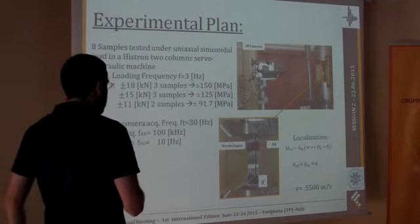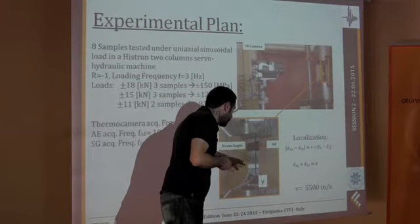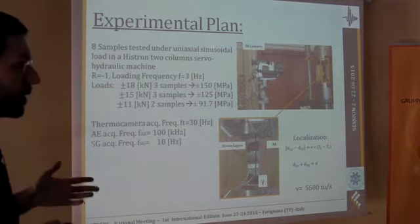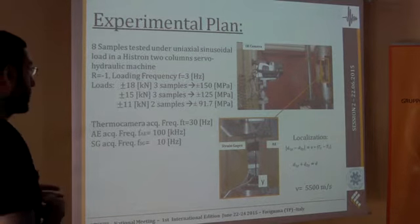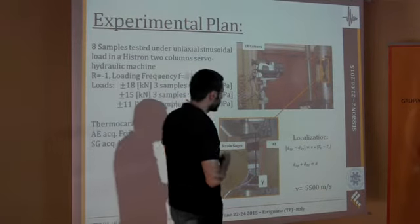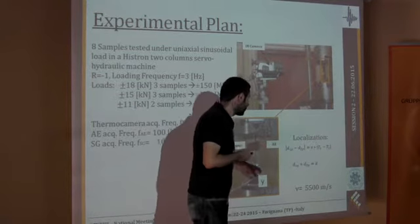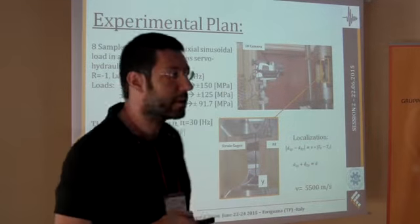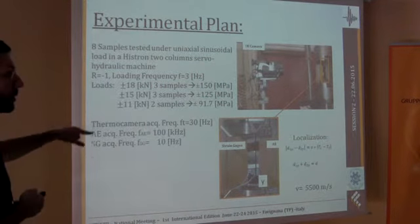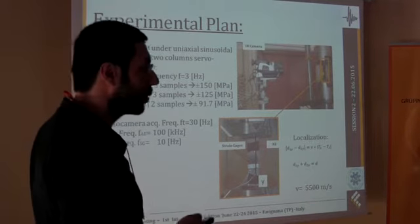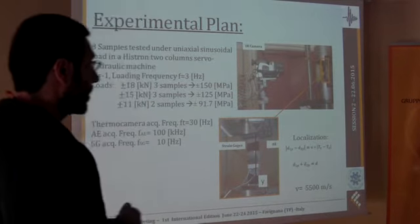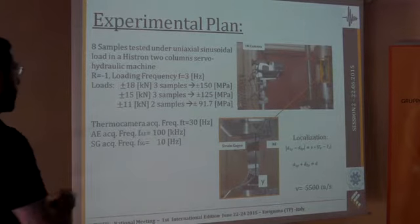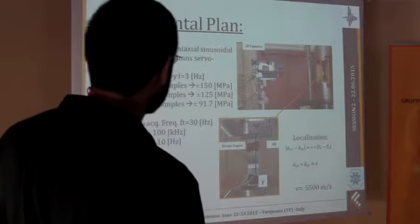I want you to notice that the two sensors were placed symmetrically with respect to the position of the notch in the samples. This allows not only to detect the signal, the acoustic emission signals, generated inside the material, but also by computing what is the difference of the time of arrival on the sensor one and on the sensor two, also to detect what is the linear position where the acoustic emission is generated inside the sample. Of course, in order that this localization algorithm can properly work, we need to determine by pre-calibration what is the speed wave of the sound in that material and it was found to be 5500 meter per second.